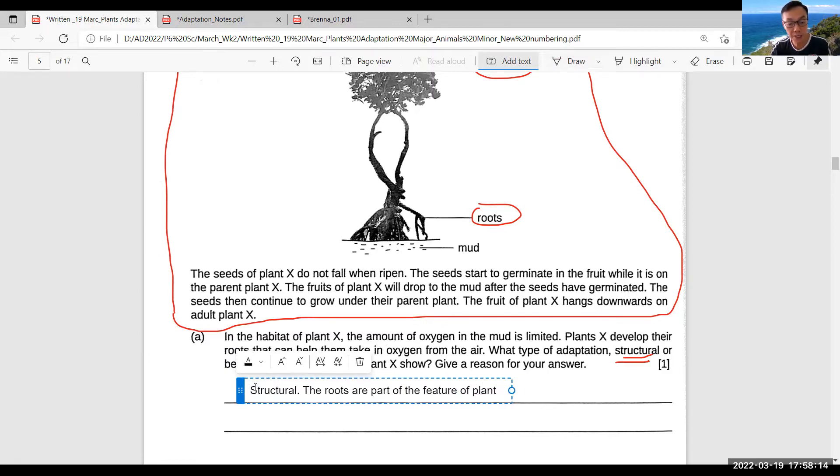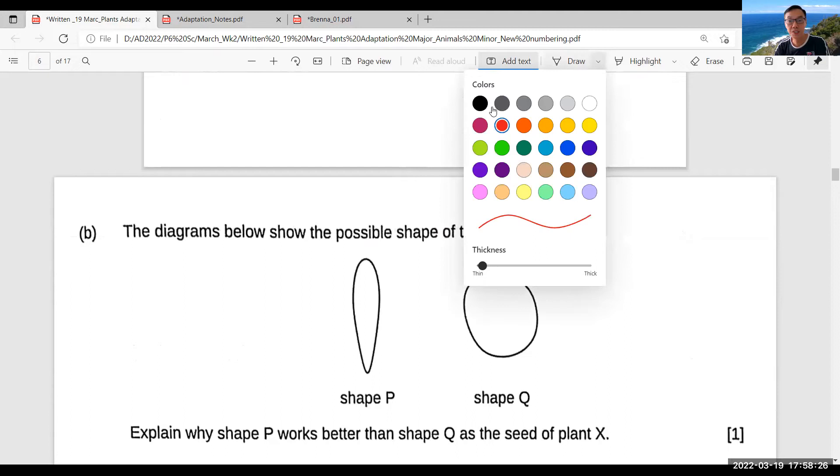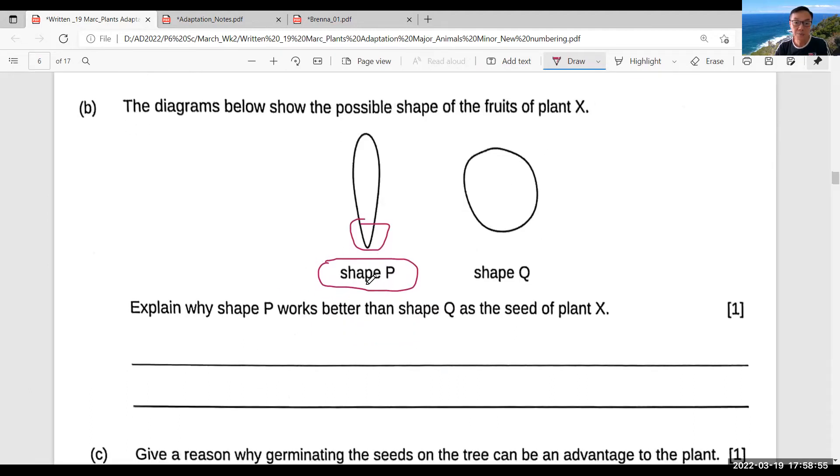By looking at the mangrove seed just now, you will definitely choose shape P as the answer. You have to explain why shape P works better—because when it falls down, can you notice the sharp end? It can poke through the soft muddy soil easier and allows the new plant to grow. Remember, you already germinate on the parent plant. Shape P has a streamlined body and is able to pierce into the mud and go deeper into the mud so that the seed can be firmly planted into the mud.